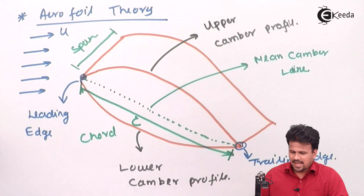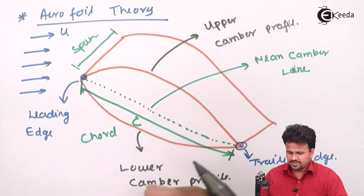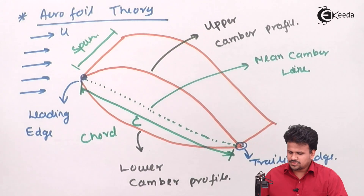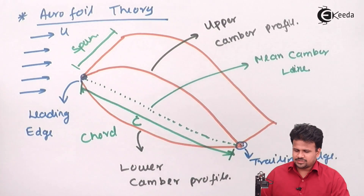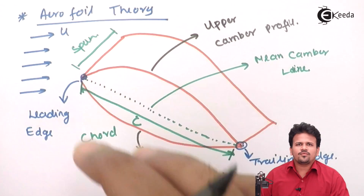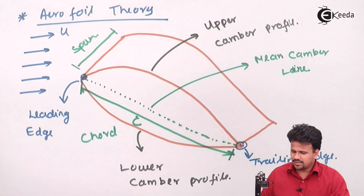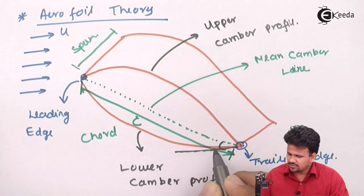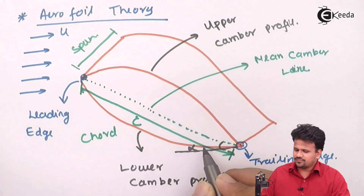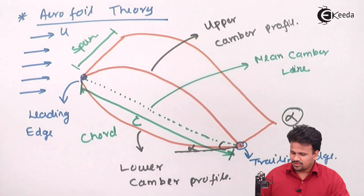This aerofoil shape changes depending on our application. We incline the aerofoil to increase the drag, friction, or to increase the lift on the entire aerofoil. This angle is called the angle of attack, denoted as alpha.